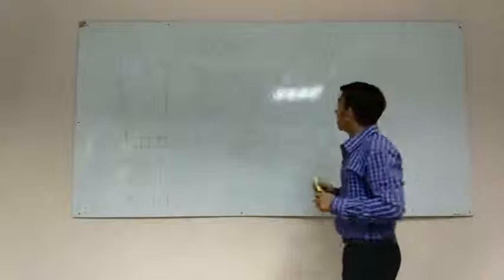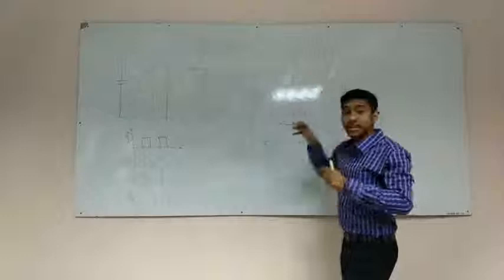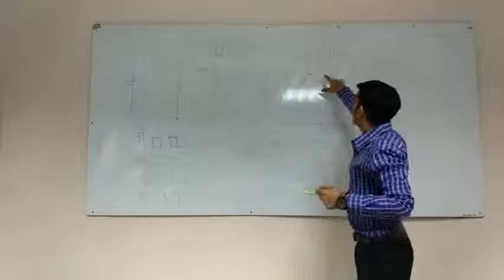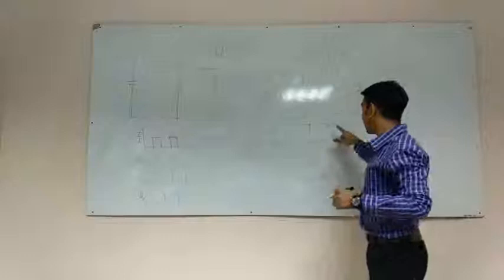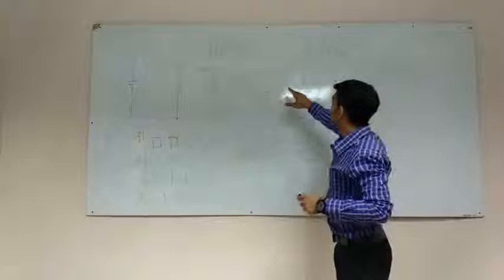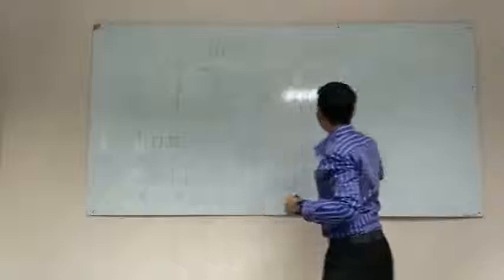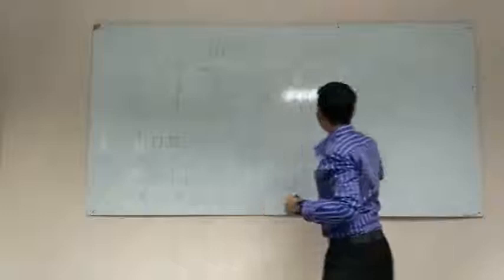When the current flows across the inductor, at that time the current is increasing. When the current flows across the diode, at that time the current is decreasing.